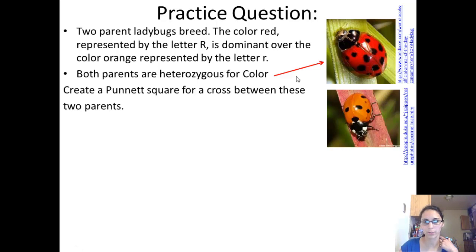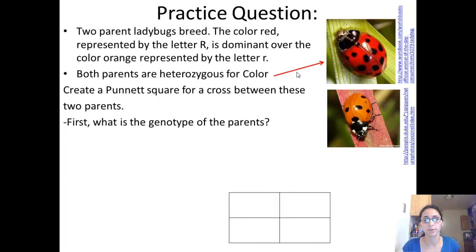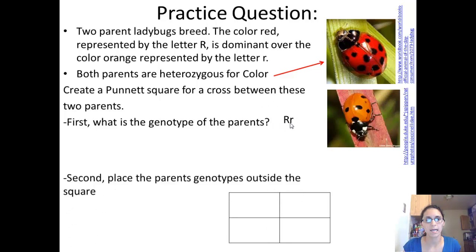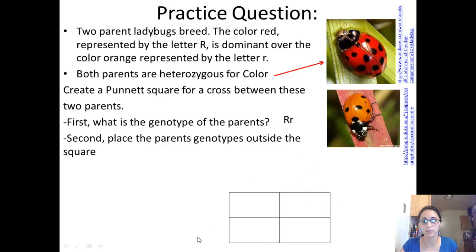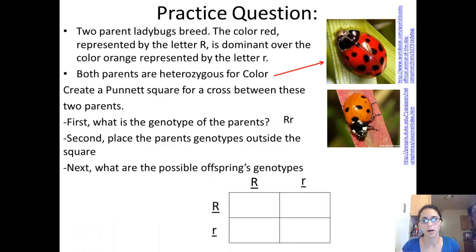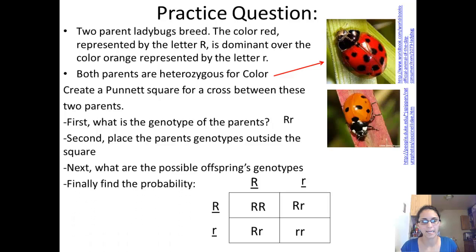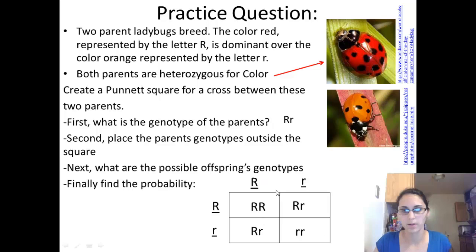Let's create a Punnett square for a cross between these two parents. The parents are heterozygous, so they each have one big R and one little r — one dominant and one recessive allele. We place the parents' genotypes outside the square, putting dad on one side and mom on the other. Then we fill in the square to find the possible offspring genotypes, and use that information to determine the probability.